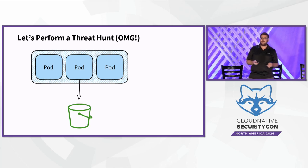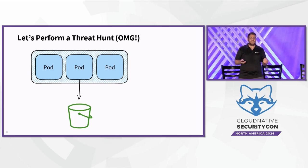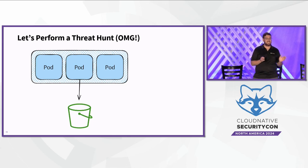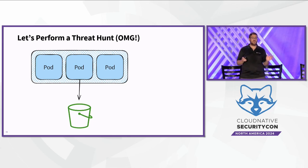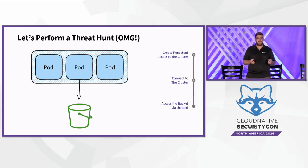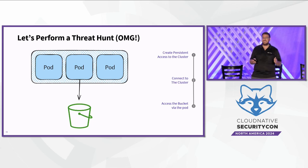Let's perform our threat hunt. We have an EKS cluster and within this cluster there is a pod with permissions to our sensitive bucket. In our hypothesis, we assume there is a threat actor that gained persistent access to our cluster and is using it as an access enabler to the sensitive bucket. It's important to note that in this hypothesis we focus on the persistence phase and not the initial access phase. We assume the admin user was compromised for a short time somehow — that's for another threat hunt. For this lecture, we chose three interesting indicators of attack: persistent access creation to the cluster from an external account, connection to the cluster from an external account, and access to the sensitive bucket via the relevant pod by the threat actor.